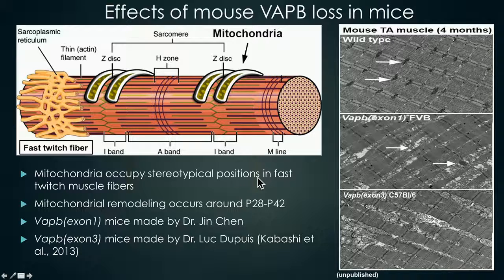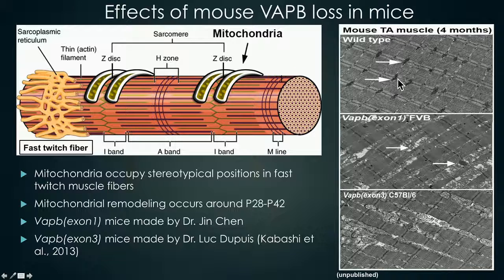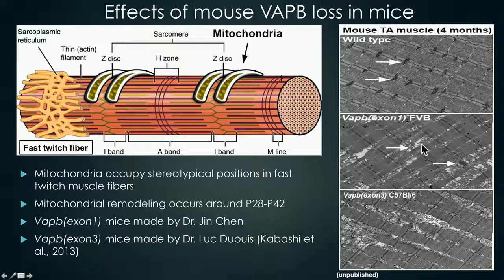Lastly, I'd like to show a little bit of our mouse data. In mice muscle, there is a stereotypical pattern where mitochondria form doublets that align along the Z-disc and the I-bands. This is seen in an image of TA muscle from 16-week-old mice, where the mitochondria forming the stereotypical doublet pattern are indicated by little black circles. We obtained two independently derived VATB knockout lines: one with an exon 1 deletion and one with an exon 3 deletion. In these knockout mice, the mitochondria are largely mislocalized, abnormal in shape, and there appears to be a lot of degeneration. This data suggests that the signaling function of MSP is conserved in mice and higher organisms.